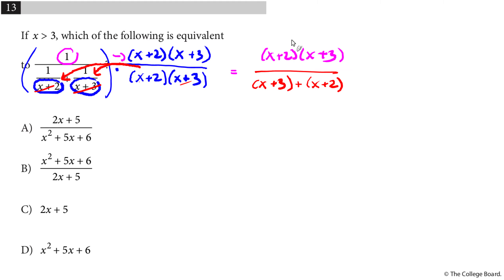And cleaning up, x plus 2 times x plus 3, I can multiply out. x times x is x squared, x times 3 is 3x, 2 times x is 2x, 2 times 3 is 6. In the denominator, just combine like terms, 2x plus 5, and combine like terms, I have a 5x here. Notice the only reasonable answer here is B.